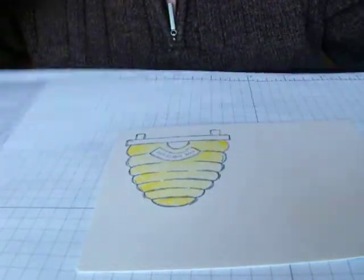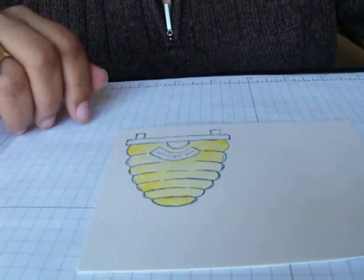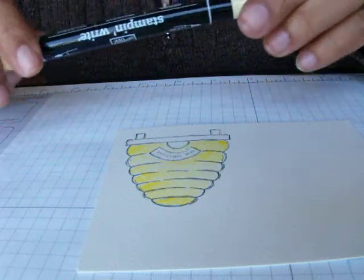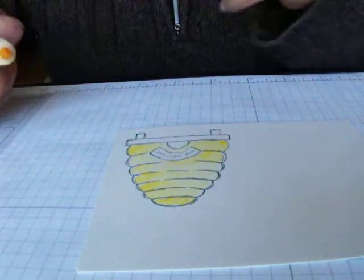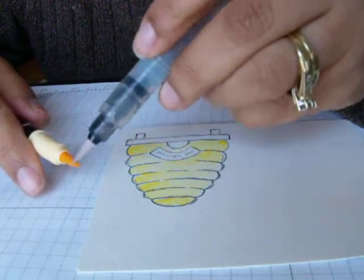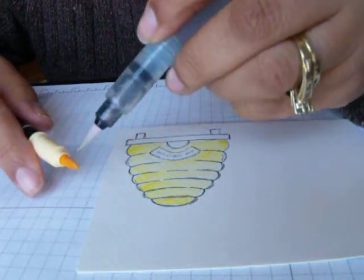So now I'm going to grab Barely Banana and do some highlight again. You do the same thing: pick up some color. You have to make sure that you pick up enough, just barely enough just to give that highlight.